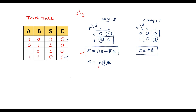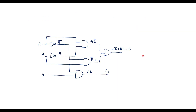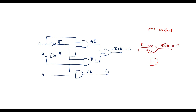Now let me implement the same thing using an XOR gate — the alternate method. Here I use one XOR gate: inputs A and B, output A XOR B which equals sum. For carry, one AND gate with inputs A and B gives output AB, which is the carry. This is also a half adder circuit using an XOR gate.